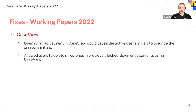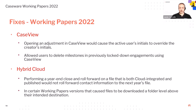For fixes in Working Papers 2022: on CaseView, they fixed an issue where opening an adjustment in CaseView would cause the active user's initials to override the creator's initials. They also fixed an issue that allowed users to delete milestones in previously locked down engagements using CaseView. For hybrid cloud, they fixed an issue where performing a year-end close and roll forward on a file that is both cloud integrated and published would not roll forward the next year's file in CaseView. They also fixed an issue in certain Working Papers versions that caused files to be downloaded to a folder level above their intended destination.